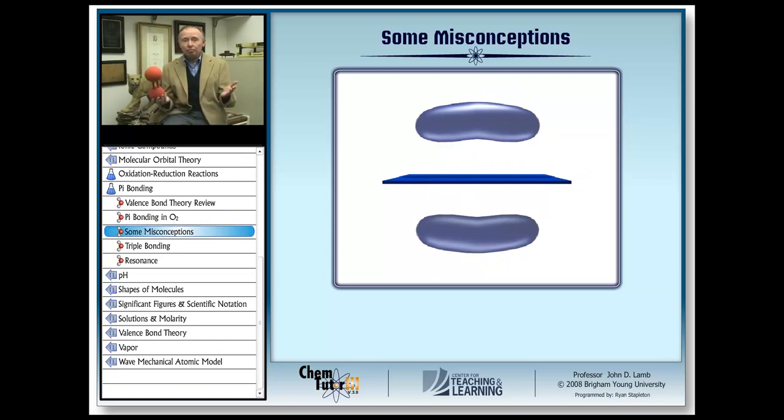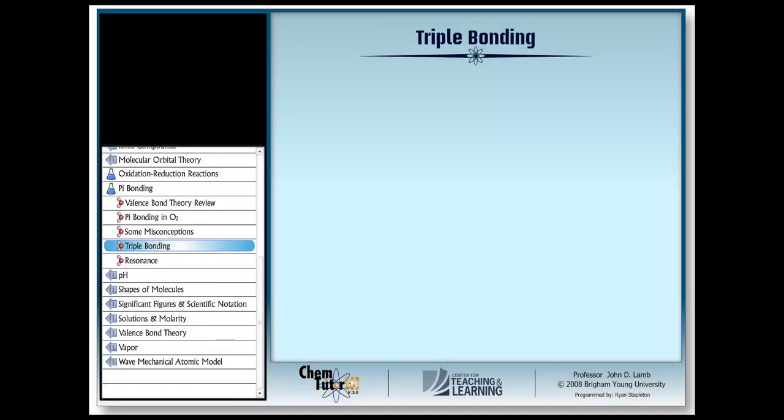Wow, amazing! We've seen how a pi bond is one of the two bonds in a double bond. What happens when we have a triple bond, I wonder?